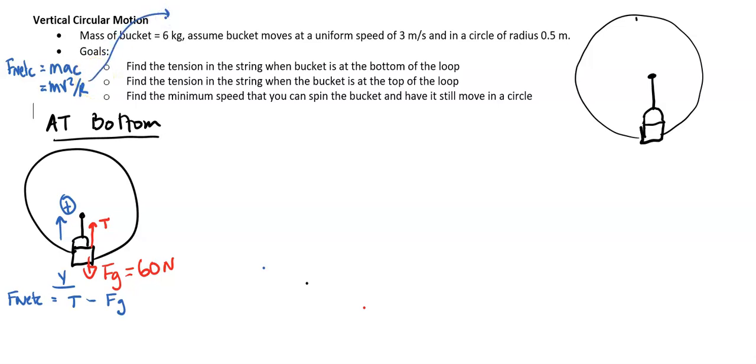And if I go ahead and plug everything in, so the mass is 6, v is 3 squared over the radius is 0.5. So for that, I get 108 newton. So that is the net force when it's moving in a circle.